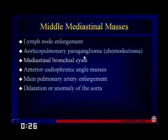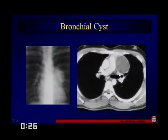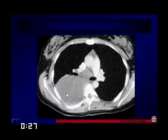Middle mediastinal masses also include bronchial cysts. This is a large bronchial cyst, which can have many different locations. Here we see one in the prevascular region, almost as if arising from the AP window. We can see them almost anywhere contiguous with the mediastinum — here is another large bronchial cyst contiguous with the subcranial area. The most common region for a bronchial cyst is going to be the subcranial area.